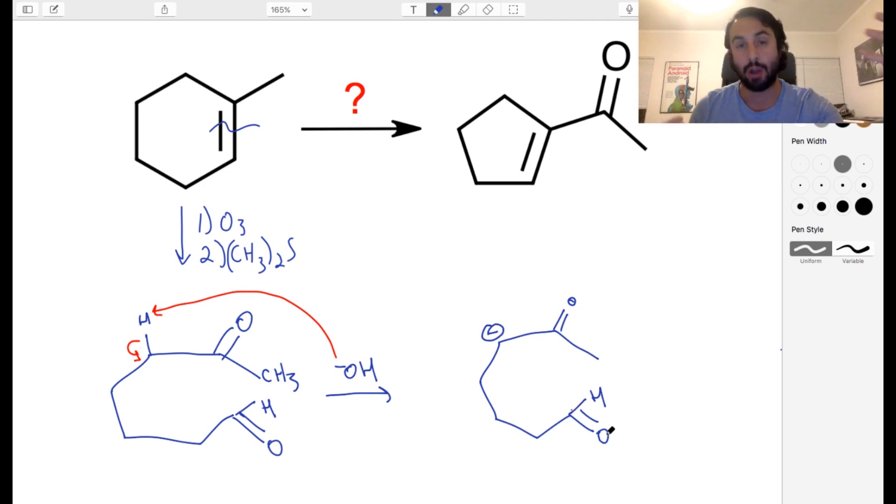We know that intramolecular reactions are favored kinetically by a wide margin, right? Because they don't have to find something else in solution and collide. They're ready to go just right in their vicinity, right? The two sites are tethered to one another. So we're certainly going to get an intramolecular reaction.